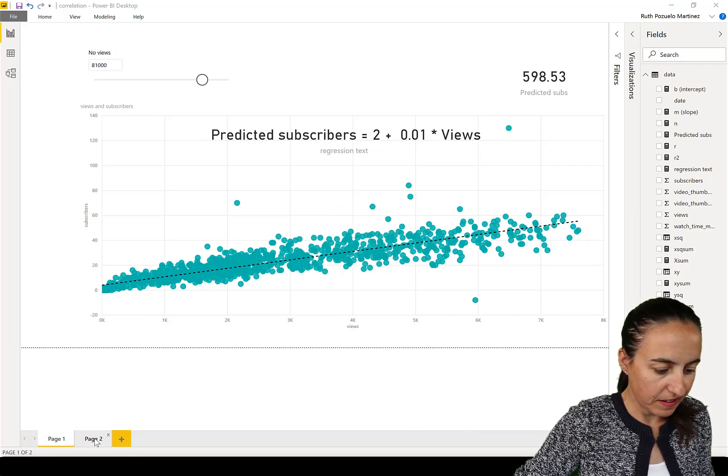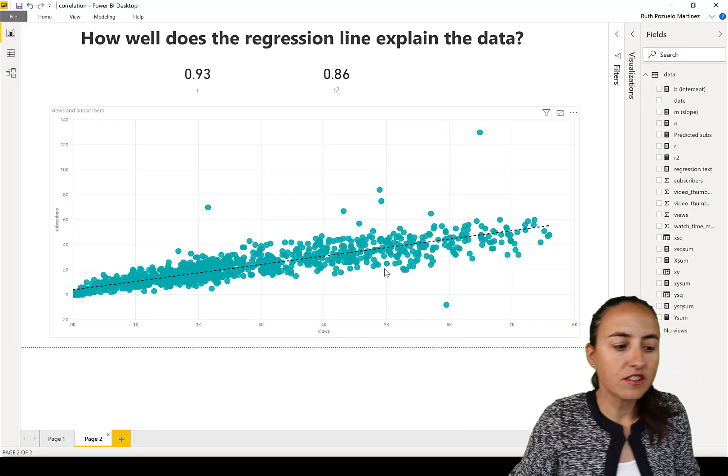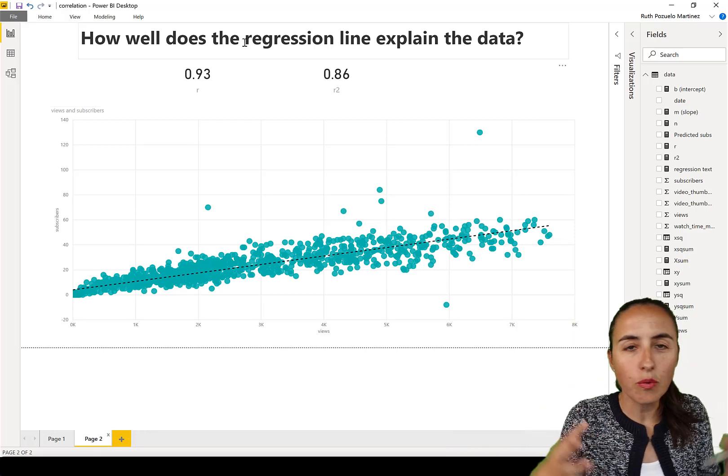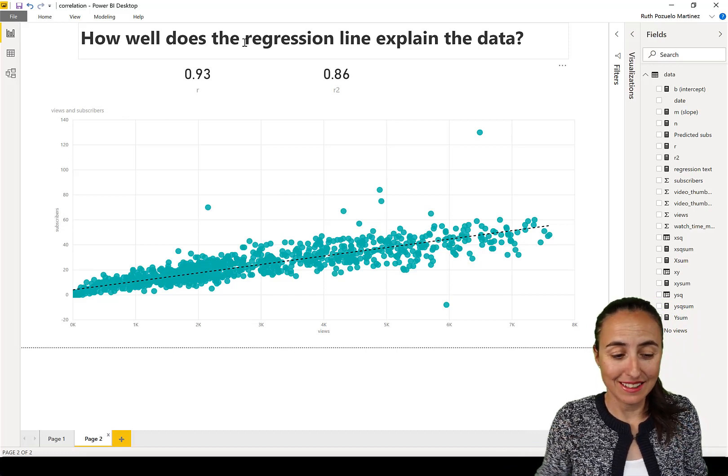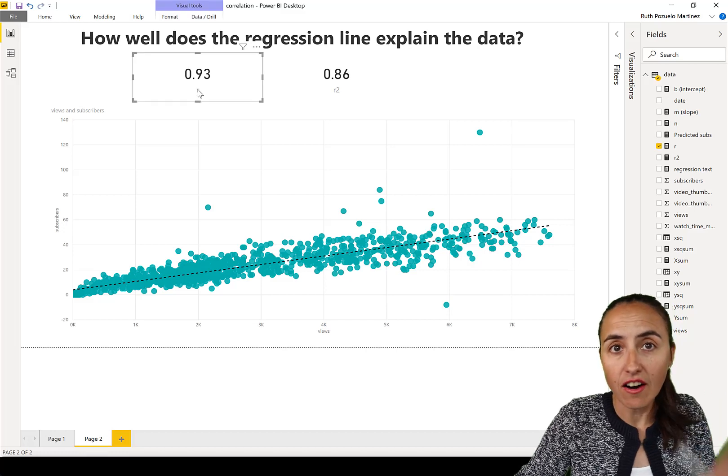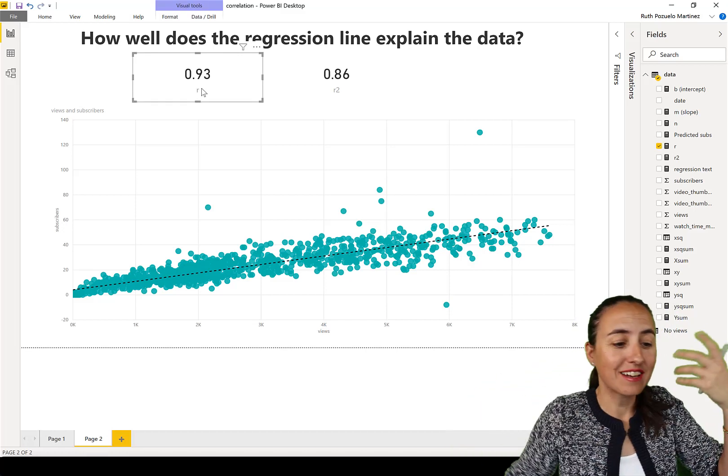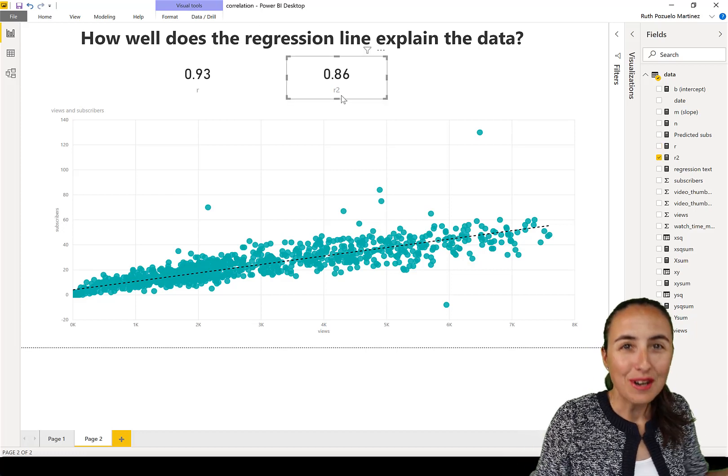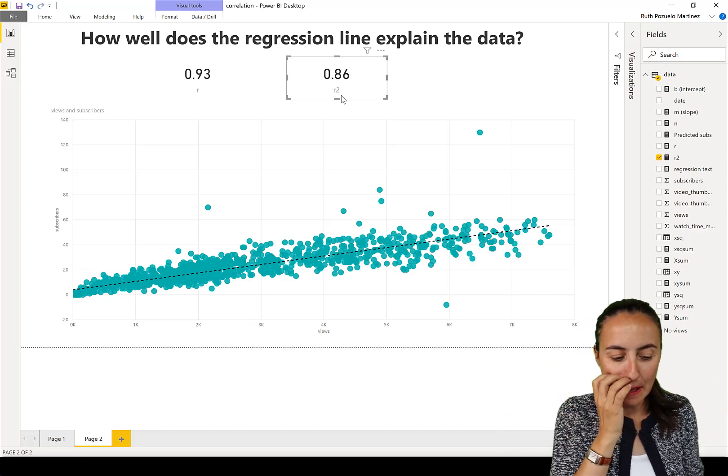Correlation tells us how well the regression line explains our data. There are two things that you normally calculate. You calculate r which is the coefficient of correlation and then you calculate r2 which is the coefficient of determination. Don't worry, I'll explain everything.